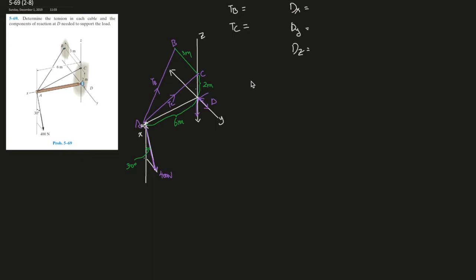It's always nice to write out the Cartesian form of a force when you're doing 3D moments - it will help you a lot later on. So let's write out what TB is. TB is the magnitude of TB times the unit vector of the rope - the direction. That should be negative 6 in x, negative 3 in y, and positive 2 in z. The magnitude is the square root of 36 plus 9 plus 4, which gives you 7.